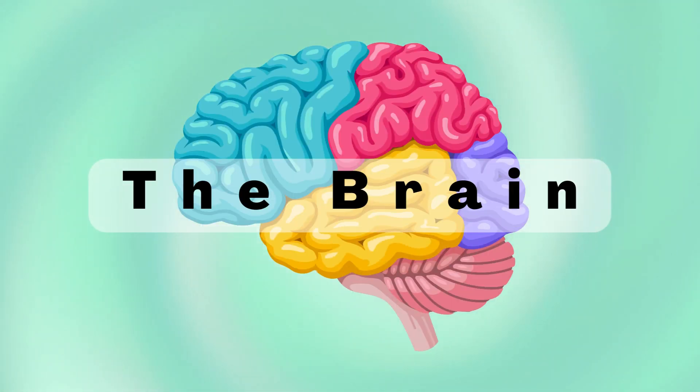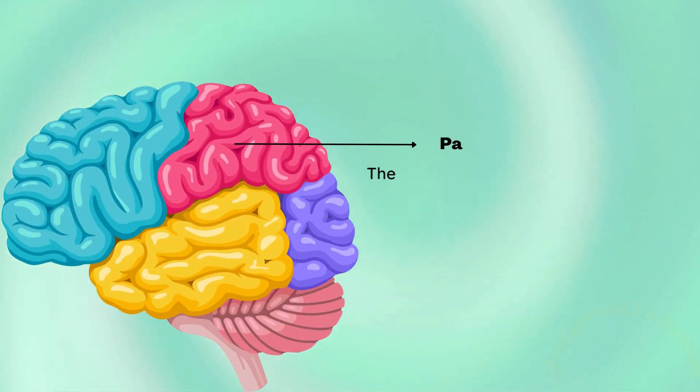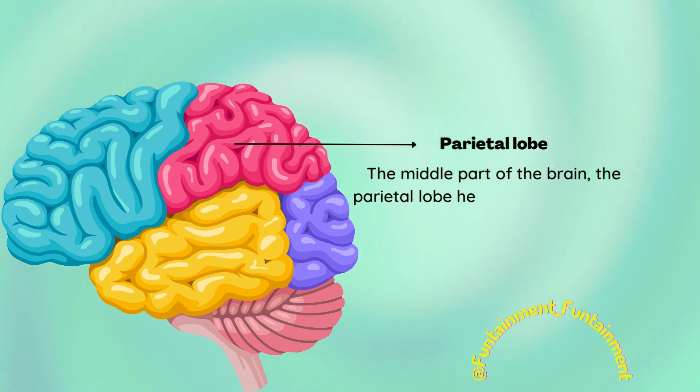The brain. Parietal lobe. The middle part of the brain. The parietal lobe helps a person identify objects.